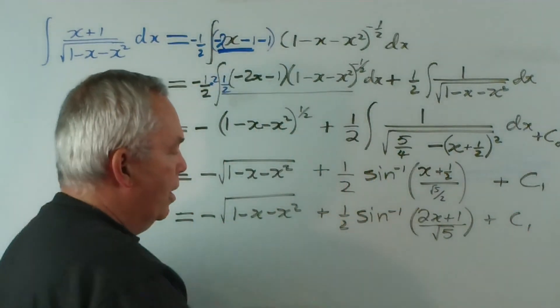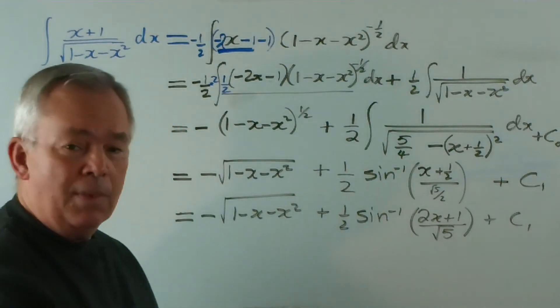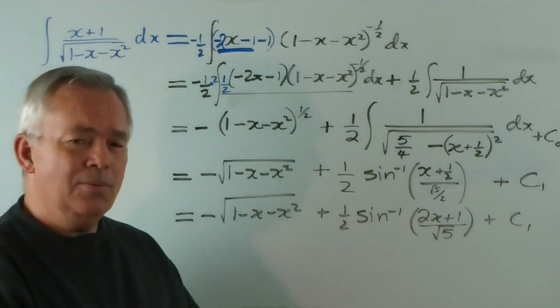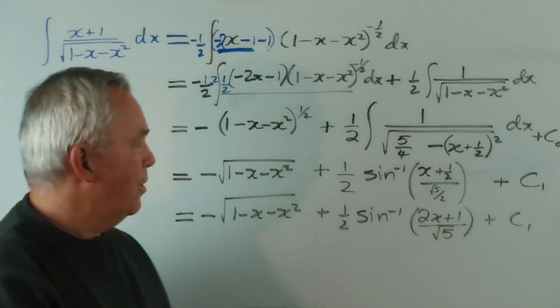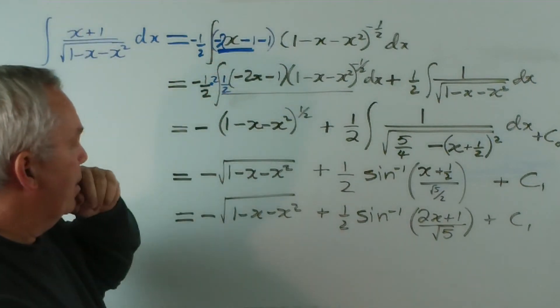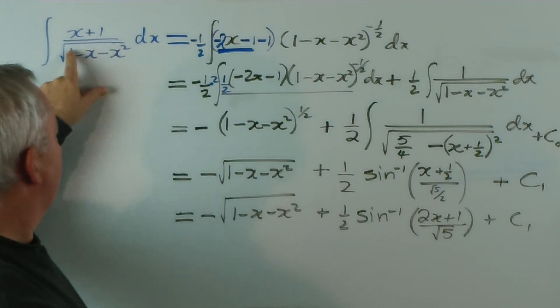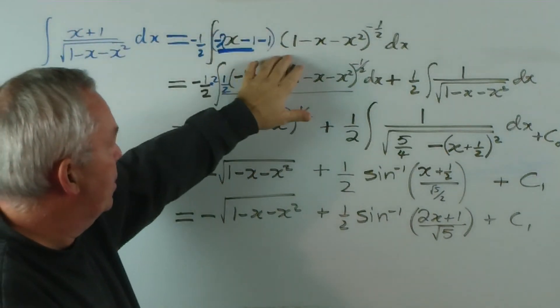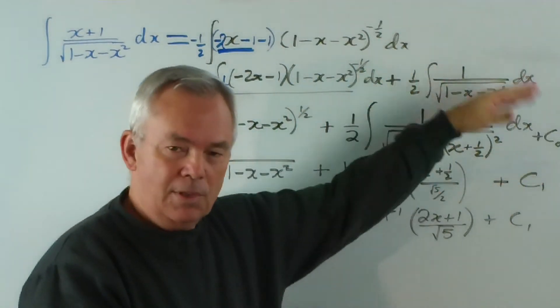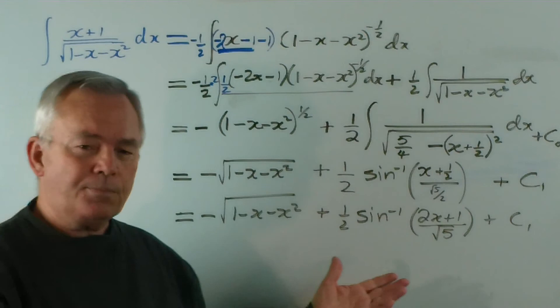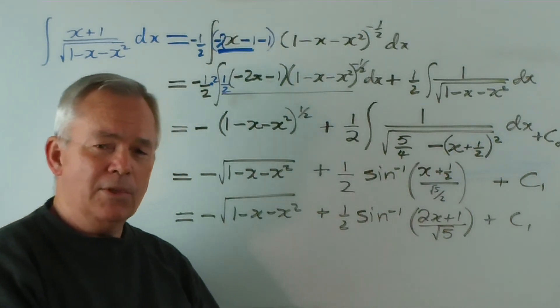And we really can't combine these or tidy it up too much. I think that's it. And that's the solution to that particular integral. Rather more difficult than some of the earlier ones, I think you'll agree. Involved a bit of observation here and some juggling around. But I think the giveaway was recognizing that the derivative of this at least looked similar to that. So, our first step was to develop the chain, and the leftovers ultimately became an inverse sine function.